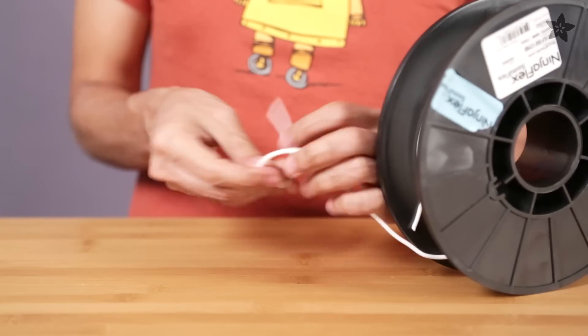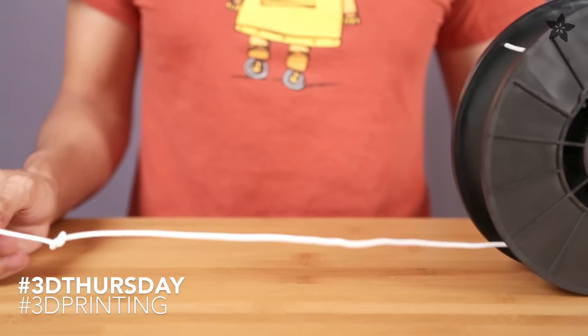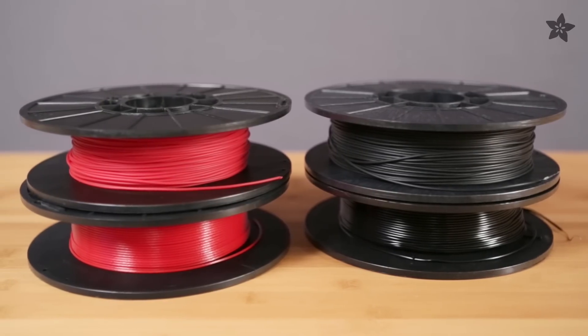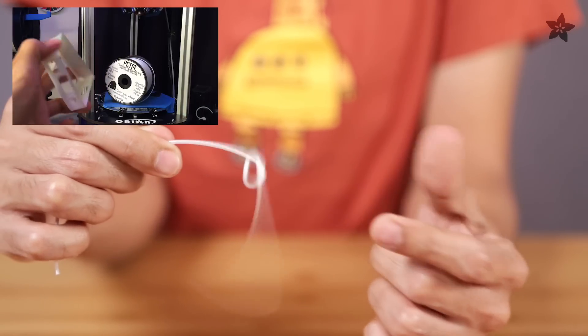Semiflex from Ninjaflex still has the same flexible properties you've come to know and love. The new material is slightly more rigid than the original formula. Semiflex is quite shiny when compared to what we're used to, and if you remember we've reviewed PCTPE in an earlier episode which you can watch here.